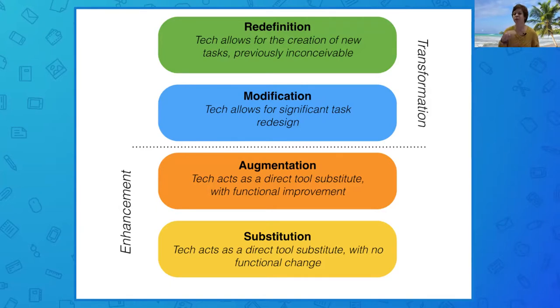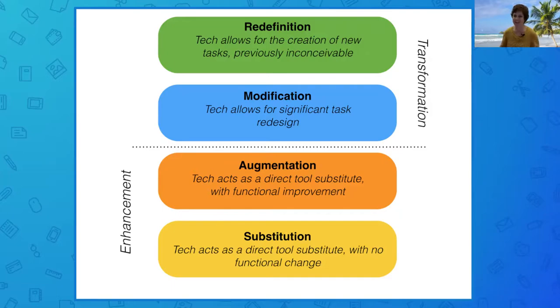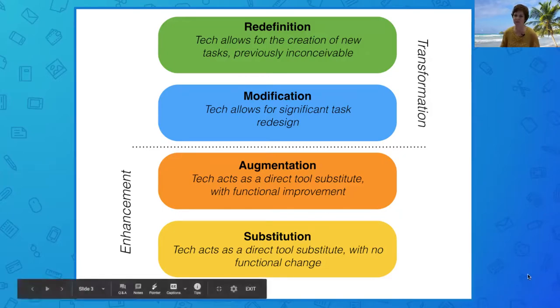We're going to take a look at an example in just a second. So there are four levels in the SAMR model: substitution, augmentation, modification, and finally redefinition.